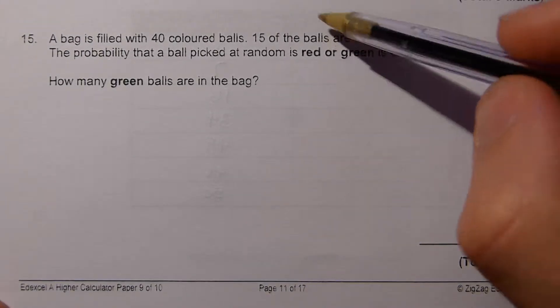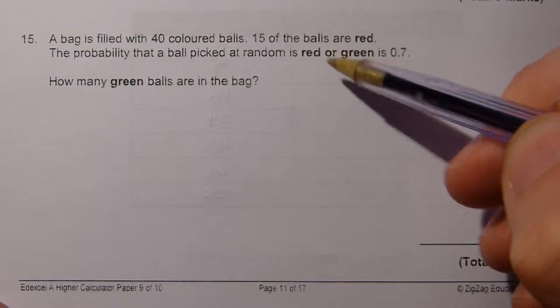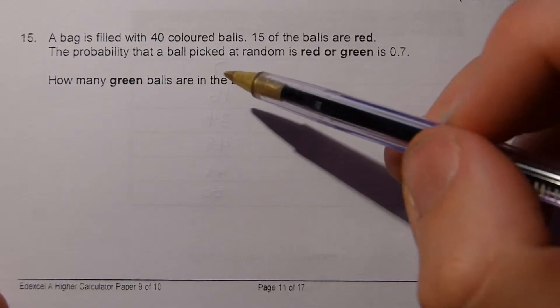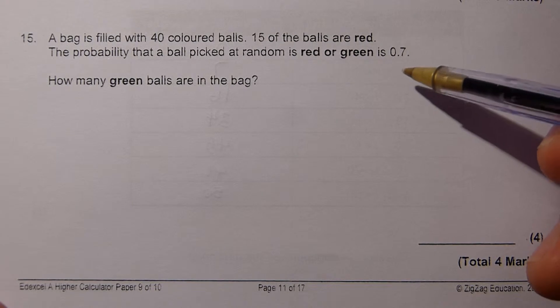Okay, question 15. So we've got a bag with 40 balls in, 15 of which are red, and it tells us the probability that a ball picked at random is red or green is 0.7.